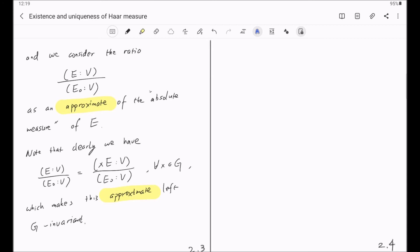The way we are going to take the limit is that we are going to let V shrink to the identity. So we hope as V shrinks to the identity element of G, this ratio will give us a Haar measure of E as a limit.